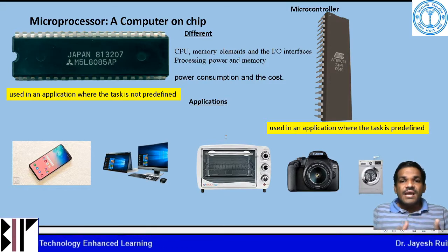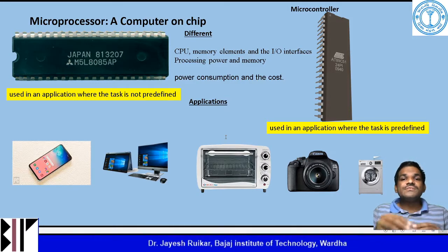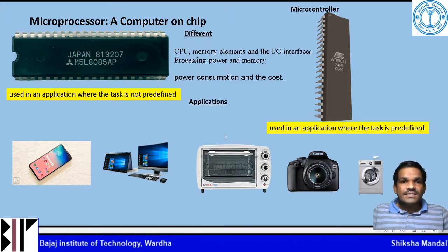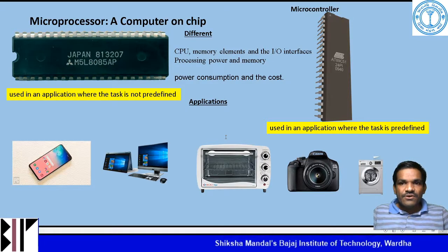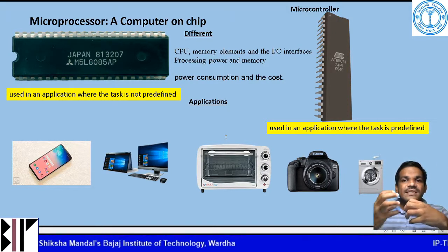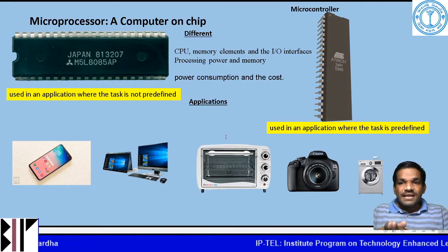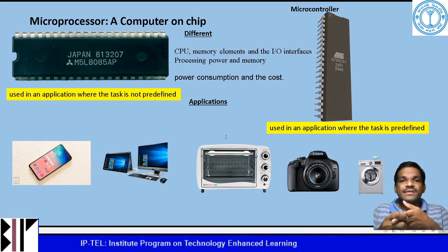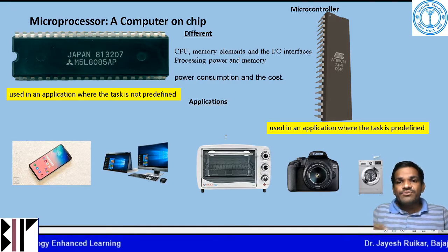The microprocessor is used in applications where intensive processing is required. The microcontroller is used for some specific task; based upon the inputs given to the microcontroller, it provides results as output. The input could be a user input or inputs coming from sensors. Examples of microcontroller applications are digital cameras, washing machines, and microwave ovens. In all these devices, the task to be performed is predefined.